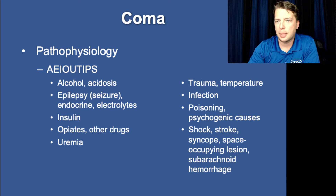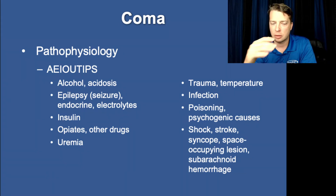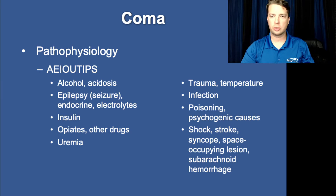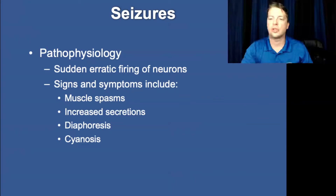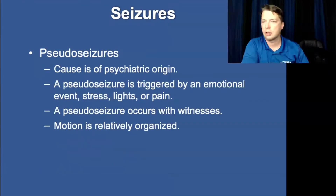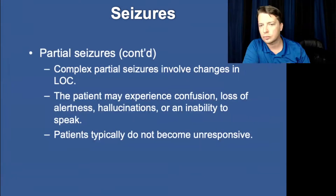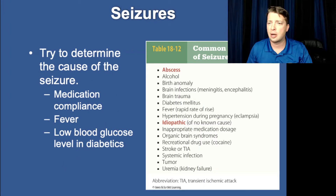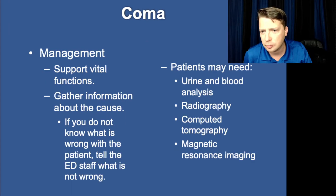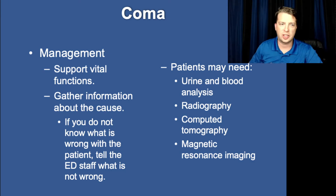We're going to pick back up on Chapter 18 where we left off last week. We covered strokes and seizures. So let's talk about seizures a little bit — what are the three major categories of seizures that we recall?